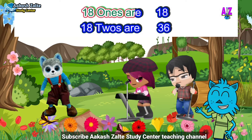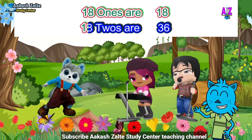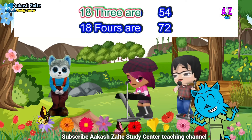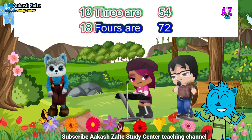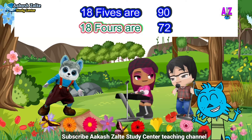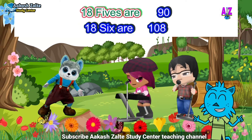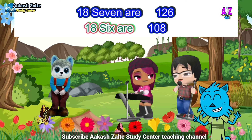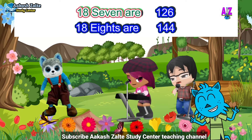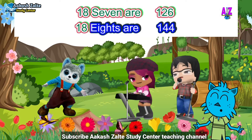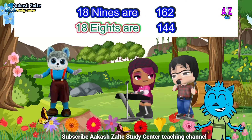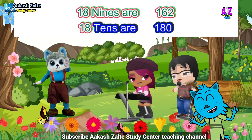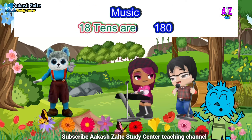18 ones are 18, 18 twos are 36, 18 threes are 54, 18 fours are 72, 18 fives are 90, 18 sixes are 108, 18 sevens are 126, 18 eights are 144, 18 nines are 162, 18 tens are 180.